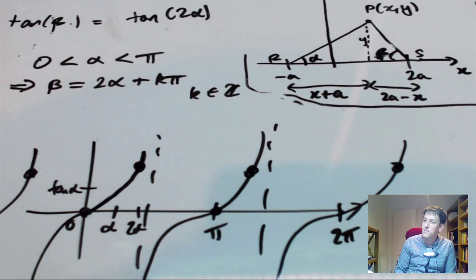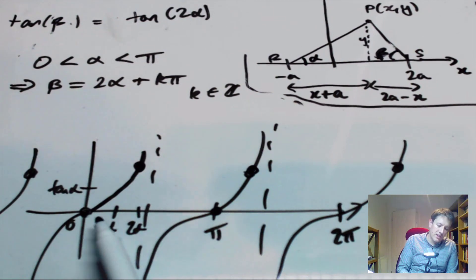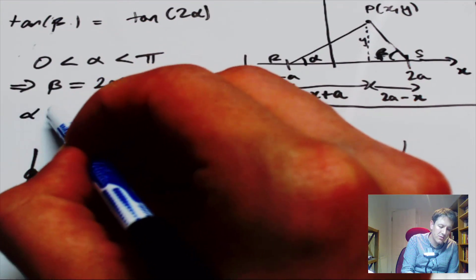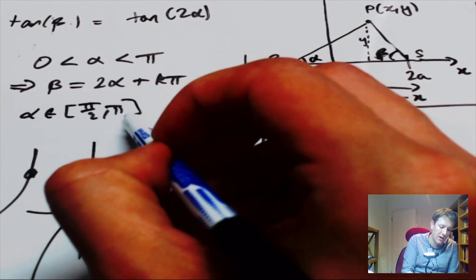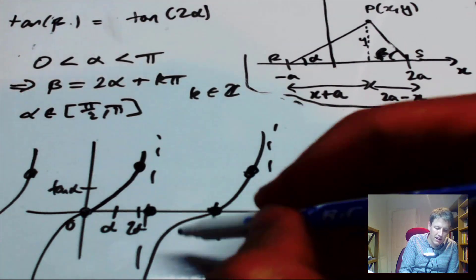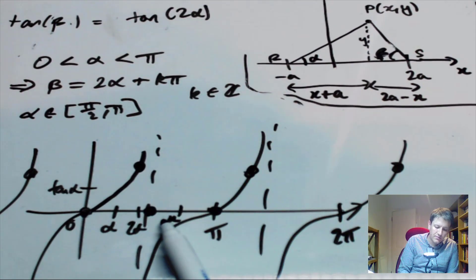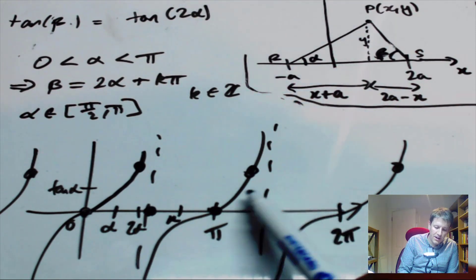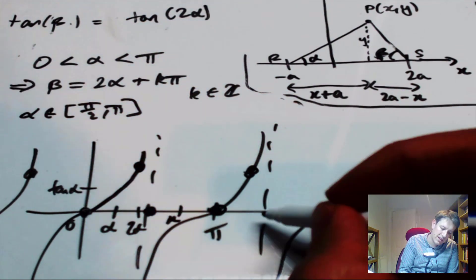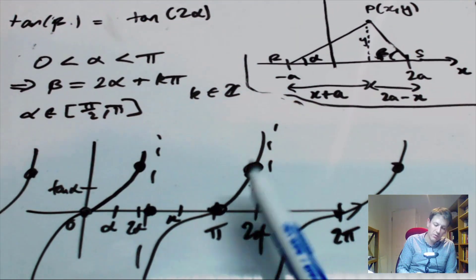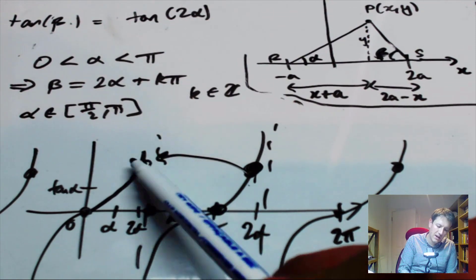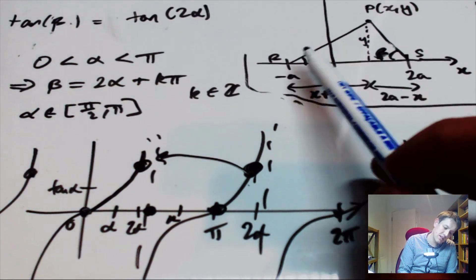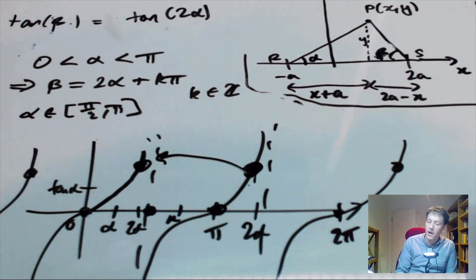If alpha is now between π/2 and π, then 2α is somewhere over in the range π to 2π. In this case, subtracting π brings it back to a value that makes sense as a triangle angle — so β = 2α − π. If alpha is greater than π/2, the triangle looks different: the point P is now positioned so that beta is smaller than alpha, and we can make geometric sense of this case too.